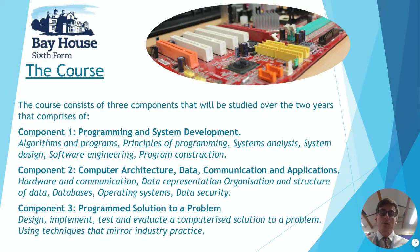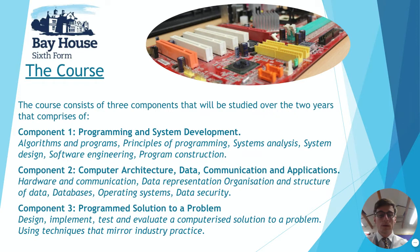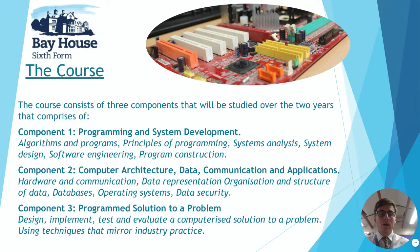The course is made up of three components. Component one covers logical problem solving, algorithms, principles of programming, system analysis, system design, system engineering, and program construction — that's the programming section, making up 40% of the course and assessed via a written assessment over two hours and 45 minutes. Component two is the theory component covering architecture, communication, and applications, also with a 40% weighting, assessed via one examination. Component three is your programming assessment where you write, test, and evaluate a program, making up 20% of your overall grade, completed in Java.